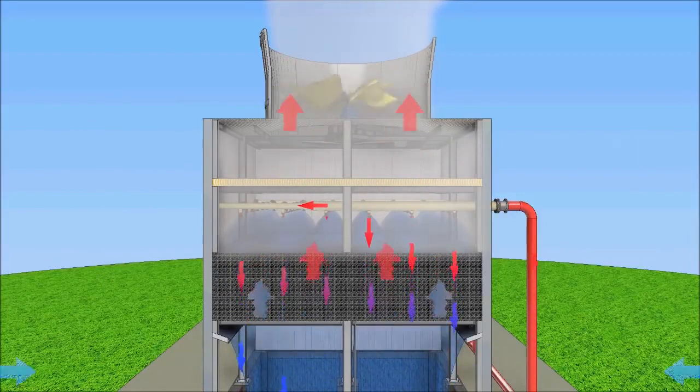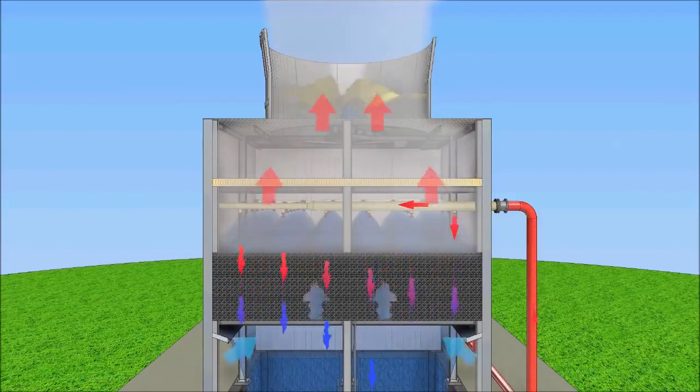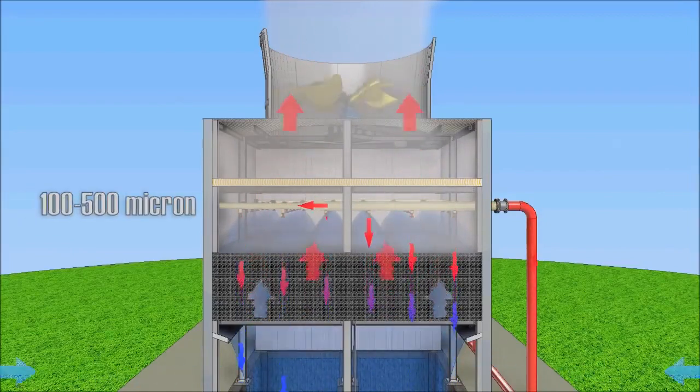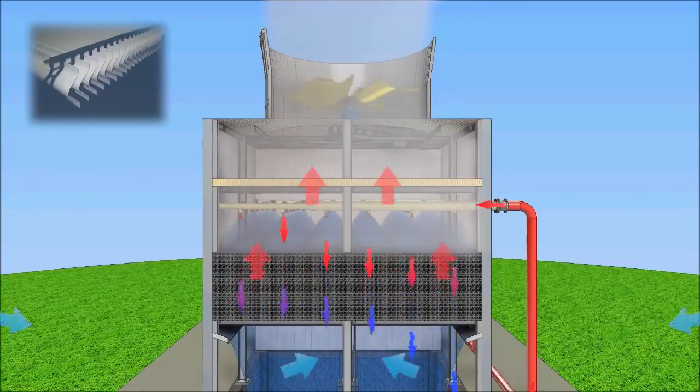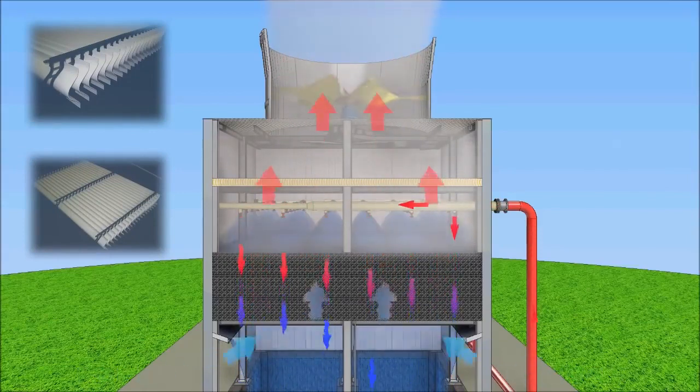During cooling tower operation, air saturated with water vapor contains water droplets with sizes of 100 to 500 microns. To prevent drift and water droplet loss, a drift eliminator system is installed.